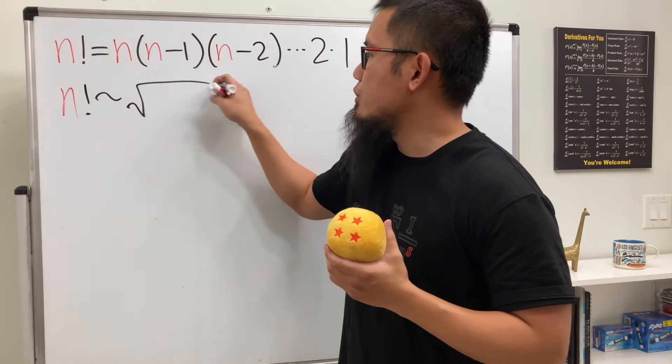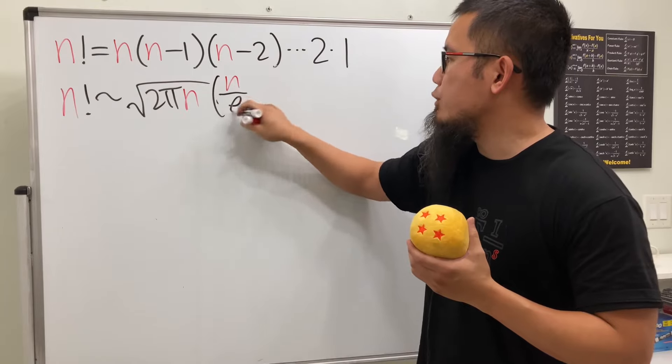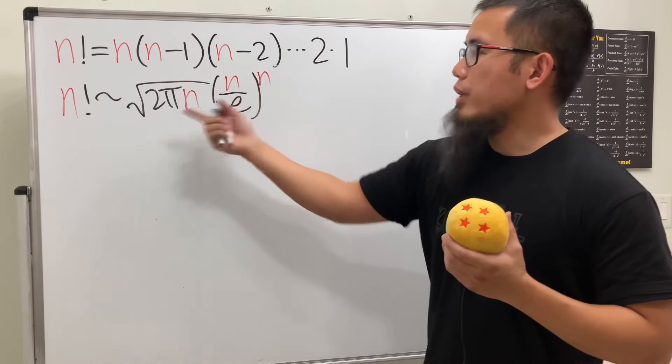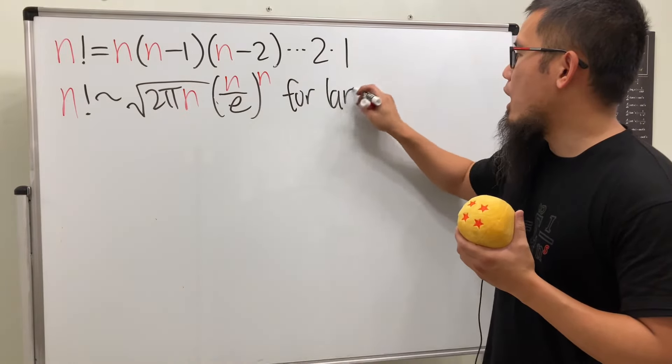n factorial is approximately square root of 2 pi n, and we multiply by n over e and raise to the n's power. And this right here is good when n is big enough, so we just say this right here is for large n.